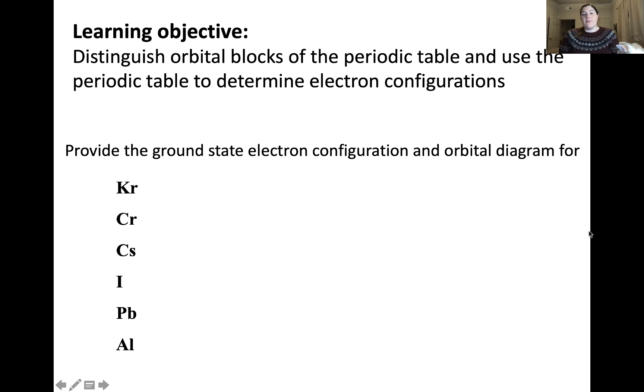In this video, we've discussed some practice examples of how to distinguish orbital blocks of the periodic table and use the periodic table to determine electron configurations. I highly recommend running through the practice problem shown below with all of these various atoms and determining their electron configuration, as well as drawing their orbital diagram. You can also challenge yourself by choosing any element on the periodic table and trying to write out its electron configuration and draw its orbital diagram. If you're feeling extra adventurous, you can also try the same for ions, which we'll discuss in another video. Thanks for watching, and I'll see you in the next one.